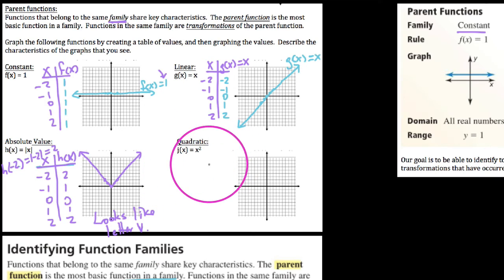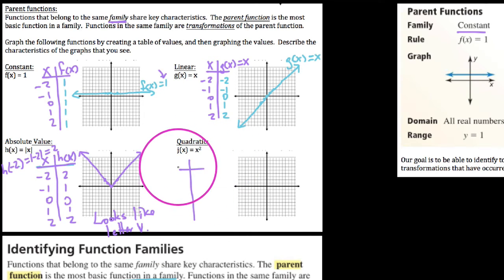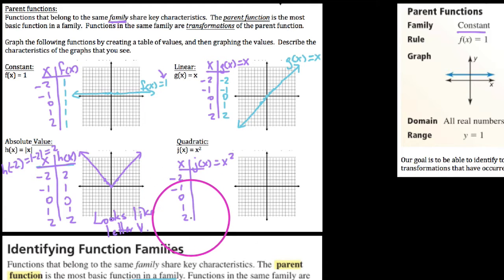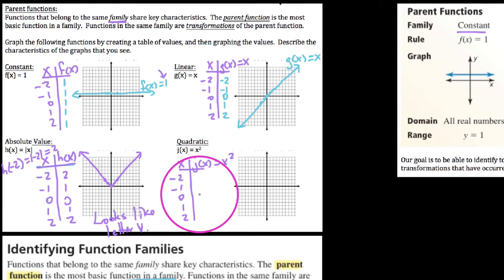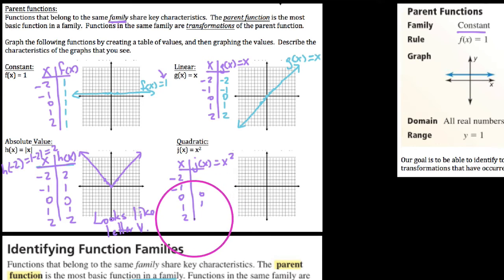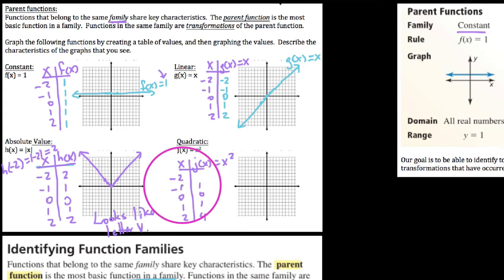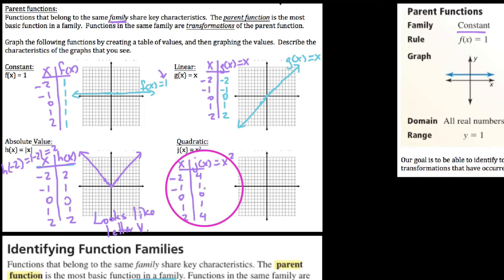Last but not least, our quadratic function: j of x equals x squared. X squared means take the value you're plugging in and multiply it by itself. So j of zero is zero, j of one is one, but j of two is four. Notice when you square a negative: negative one times negative one is positive one, and negative two times negative two is positive four. Similar to absolute value in that all our outputs happen to be non-negative.